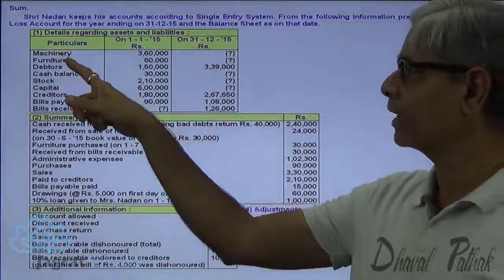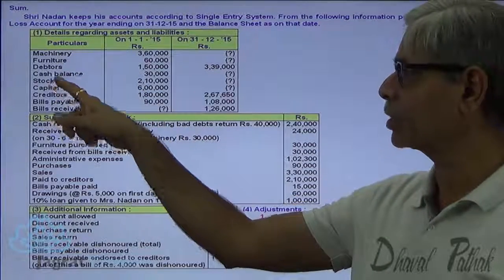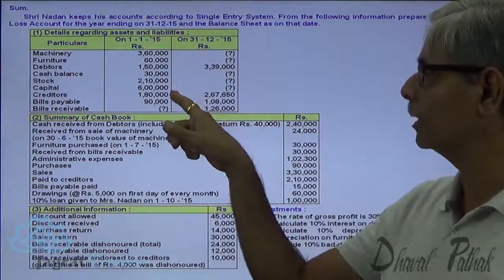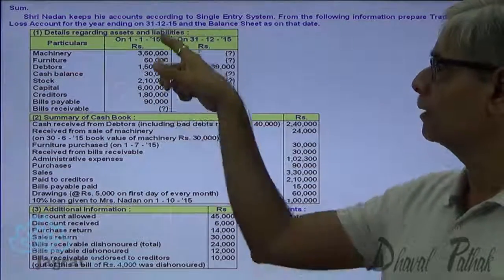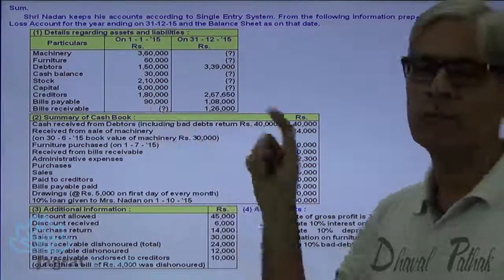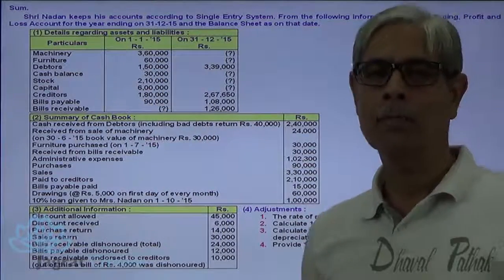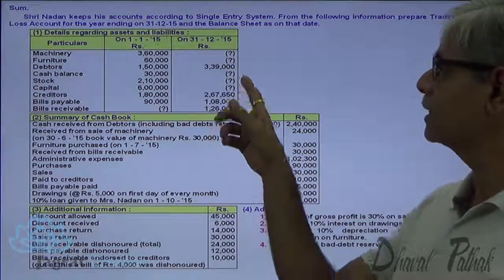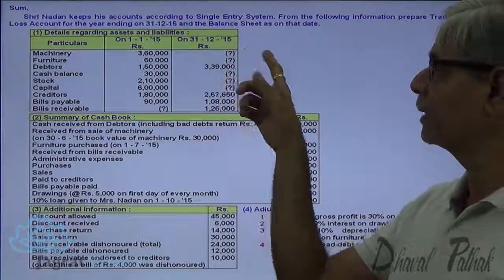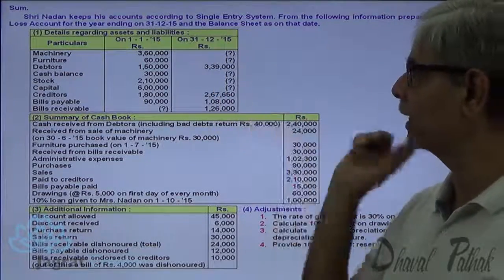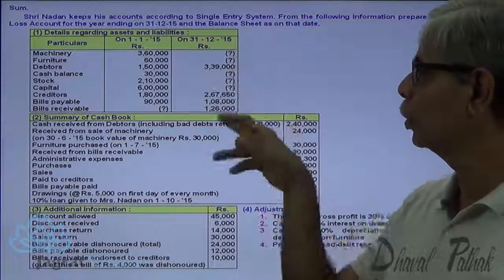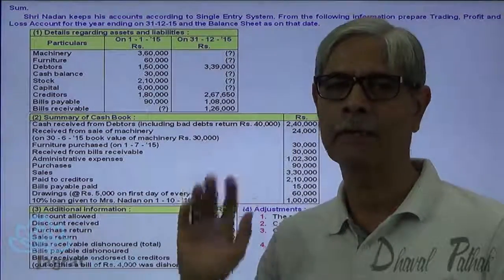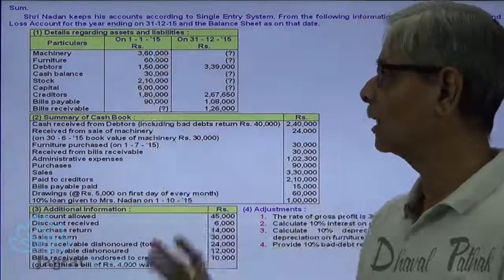The given items include machinery, furniture, debtors, cash, stock, capital, creditors, bills payable, and bills receivable. These are the opening balances, but the bills receivable opening balance is missing. The closing balances of machinery, furniture, cash, stock, and capital are also missing and need to be found out by preparing all these accounts.